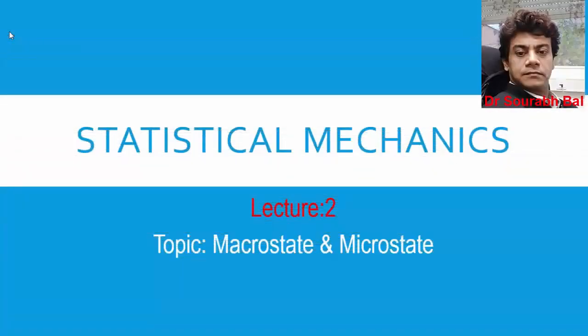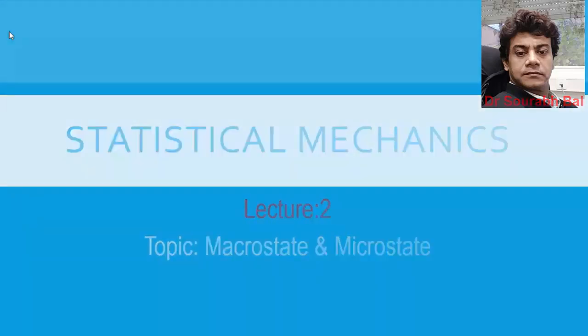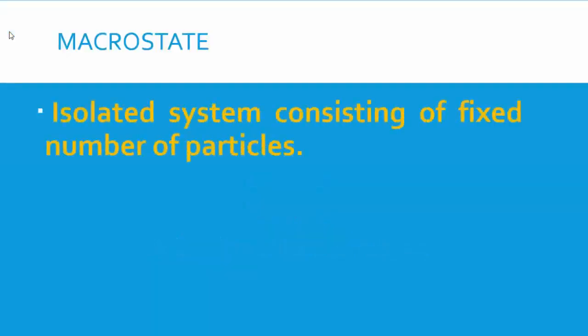We come to Lecture 2, and the topic for Lecture 2 is macrostate and microstate. In Lecture 1, we covered the difference between the three statistics: Maxwell-Boltzmann statistics, Bose-Einstein statistics, and Fermi-Dirac statistics. In this lecture, we are going to discuss two important concepts from statistical mechanics: macrostate and microstate.